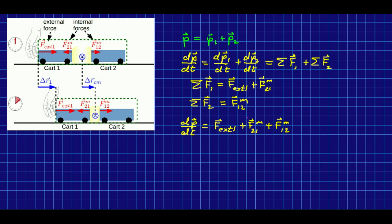But now notice something: these two forces are an interaction pair. So that tells us that the force that two exerts on one is just the negative of the force that one exerts on two. And that means that the vector sum of these two forces is zero.